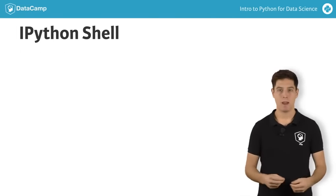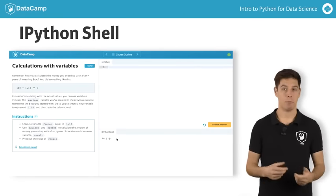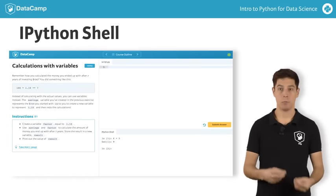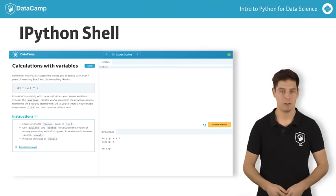Let's start off simple and use Python as a calculator. Let me type 4 plus 5 and hit enter. Python interprets what you typed and prints the result of your calculation, 9.